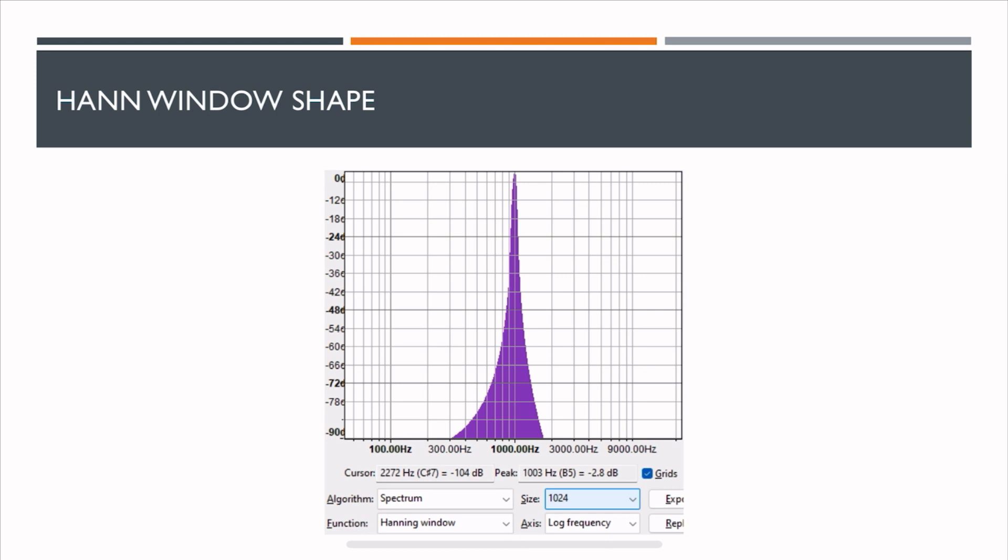This is a Hann window. If you compare this with the rectangular window, it's much better because it has reduced the spectral leakage drastically and it's also capturing the 1 kHz, but there is some minor amplitude error at the top.